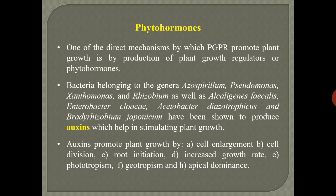Phytohormones — apart from nutrient acquisition, PGPR can improve plant growth by inducing the production of phytohormones. They can either produce phytohormones themselves or stimulate plants to produce them. One of the direct mechanisms by which PGPR promote plant growth is through the production of phytohormones, mainly auxins, cytokinins, and ethylene. Auxin and cytokinin production is increased while ethylene production is decreased. Many bacteria such as Azospirillum, Pseudomonas, Xanthomonas, Rhizobium, Alcaligenes faecalis, Enterobacter cloacae, and Acetobacter diazotrophicus are known to produce auxins.